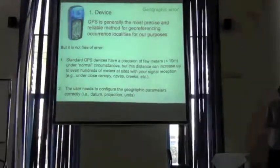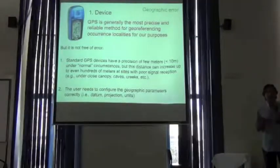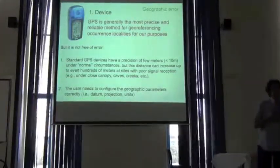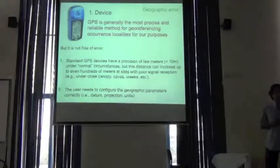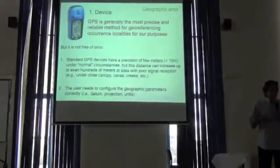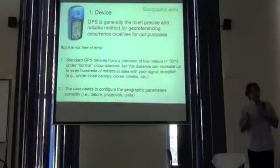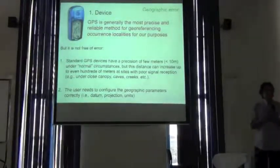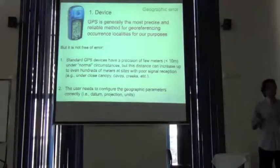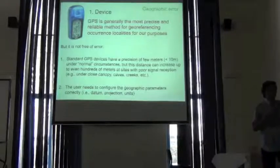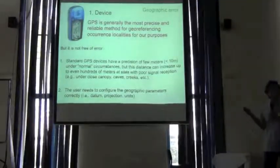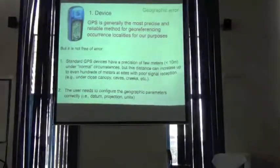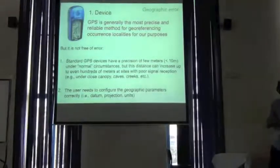Nowadays, the best device we have for getting coordinates or geographic location for our collecting localities is the GPS. These devices now have very small error in terms relevant to niche modeling, because most of them under normal conditions have an error of less than 10 meters. If you are under certain circumstances like in caves or under a closed canopy, this error can increase to some tens of meters. But in general, if you are using a GPS, you have reliable coordinates.